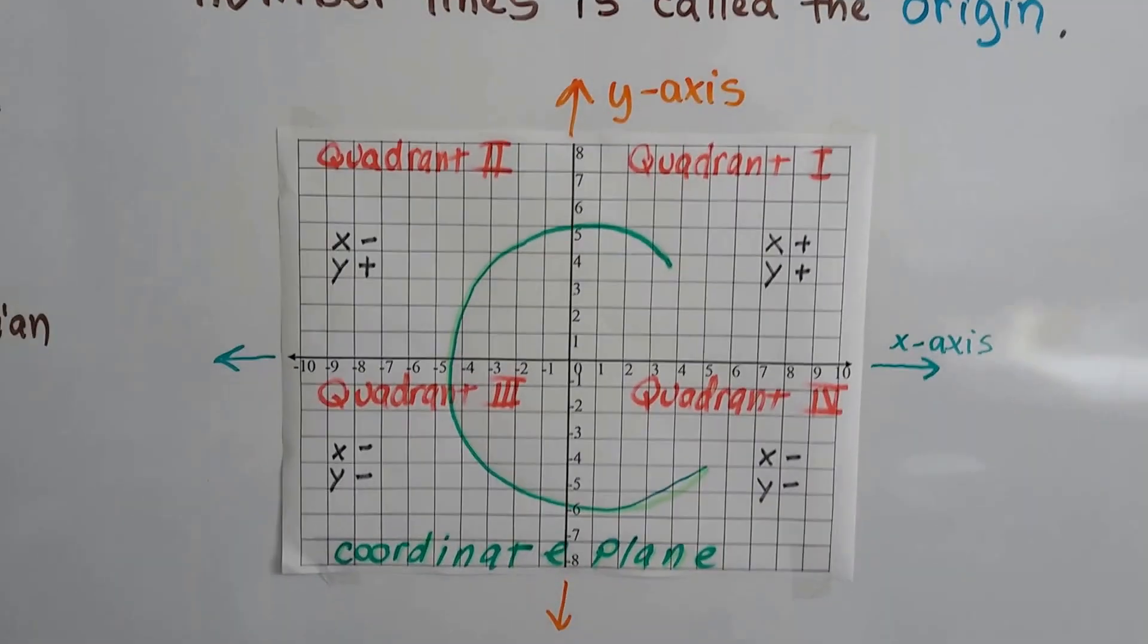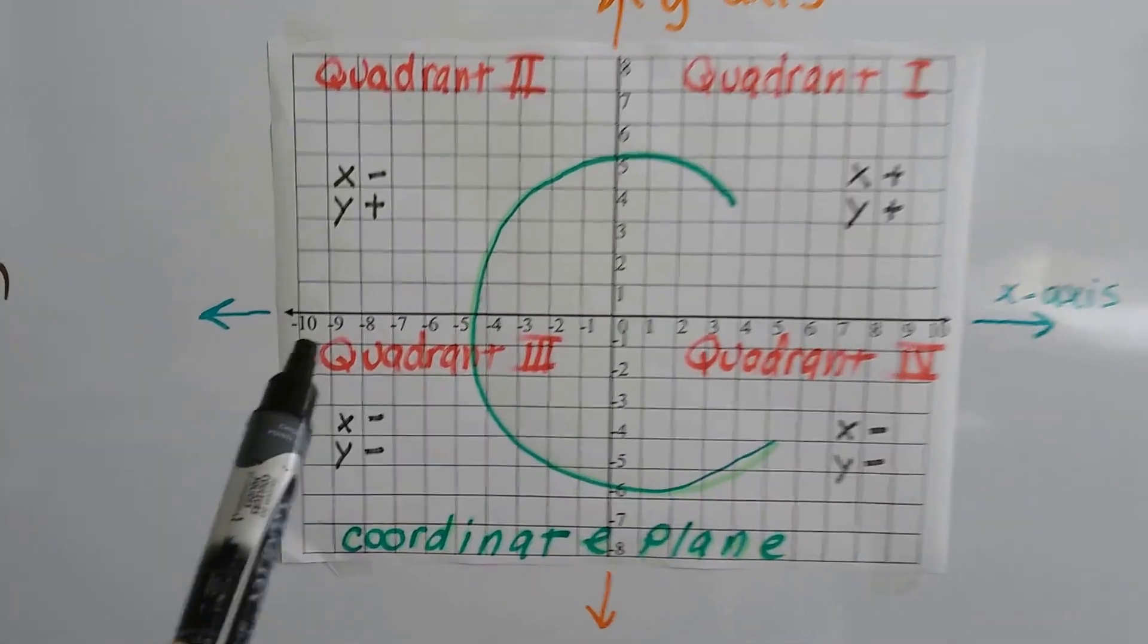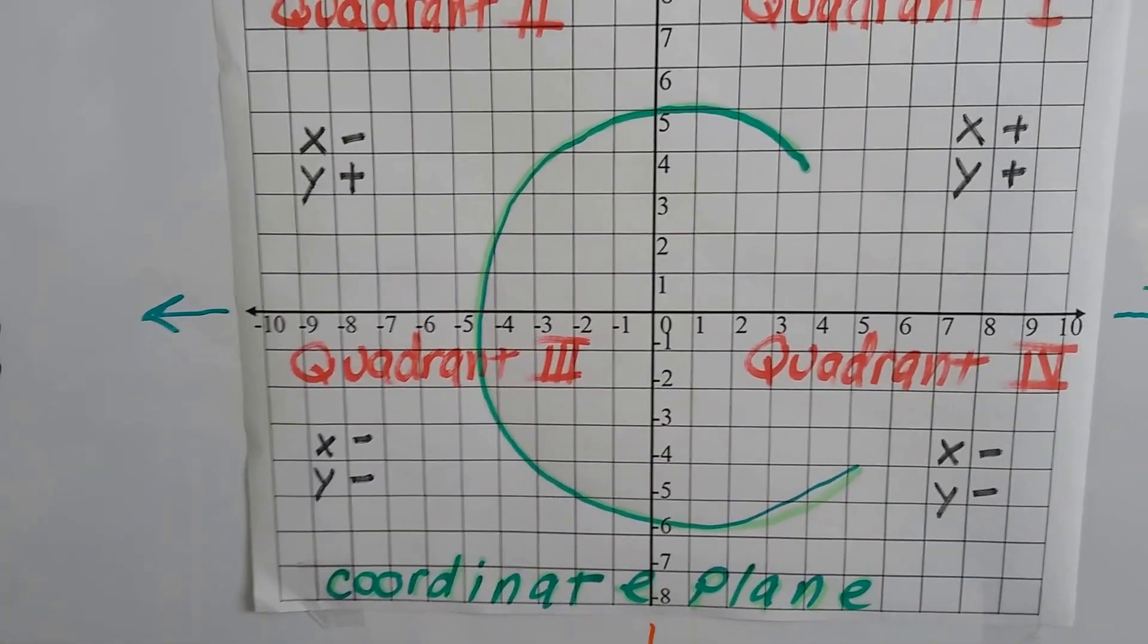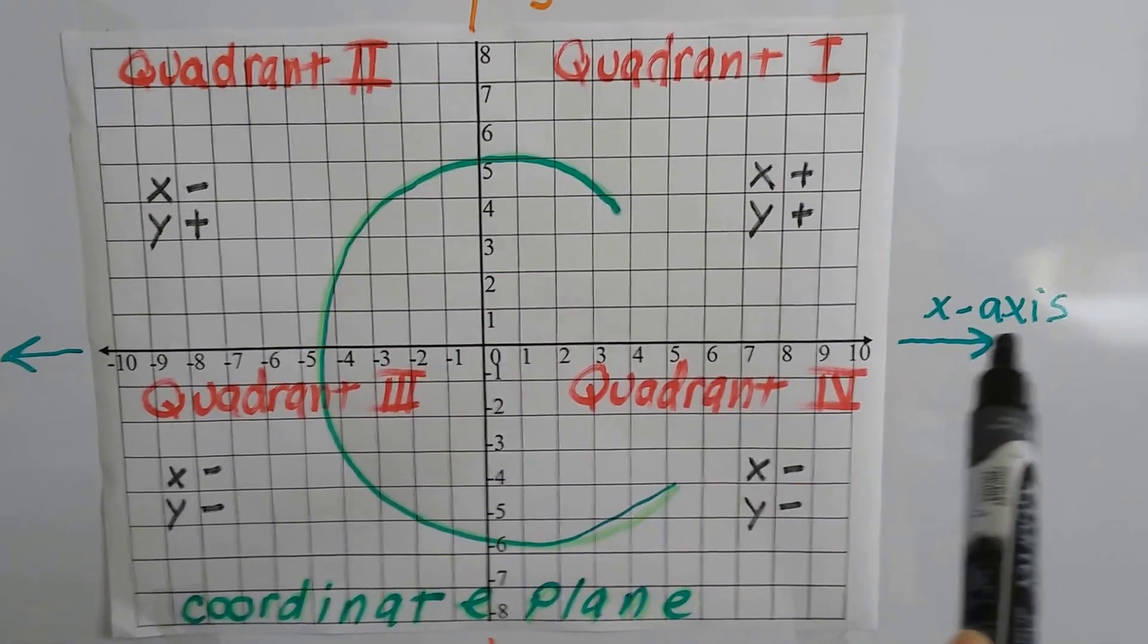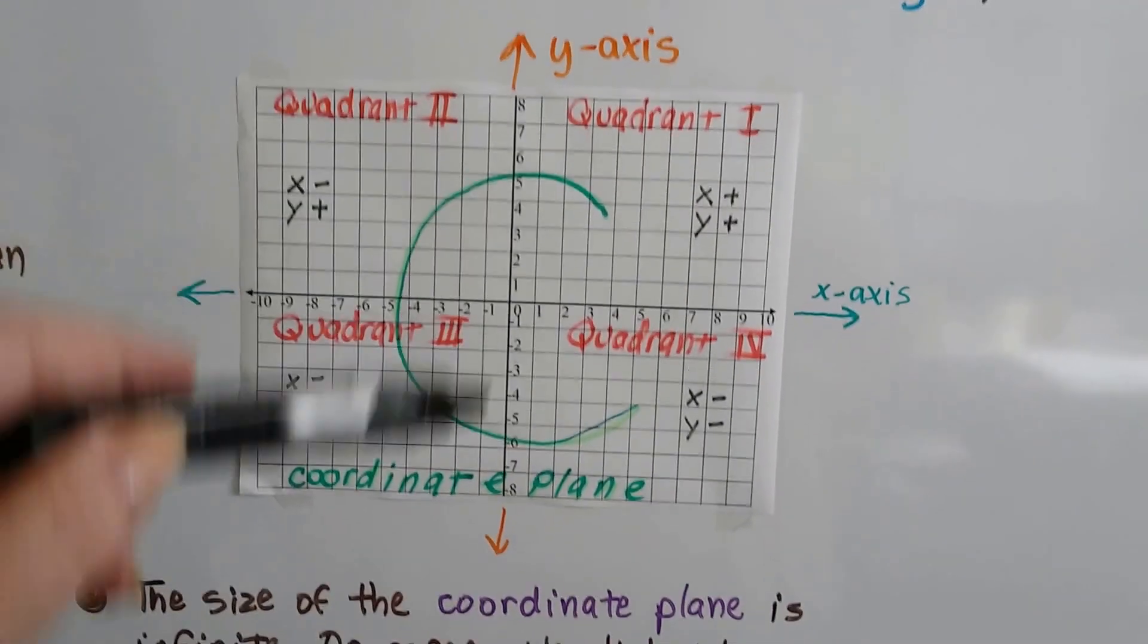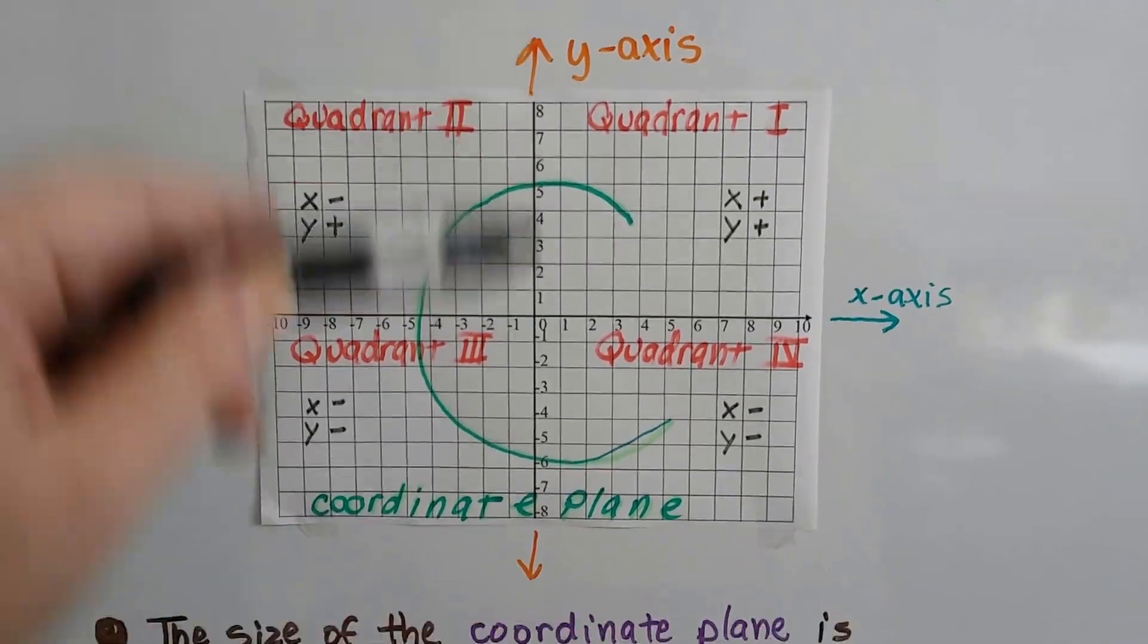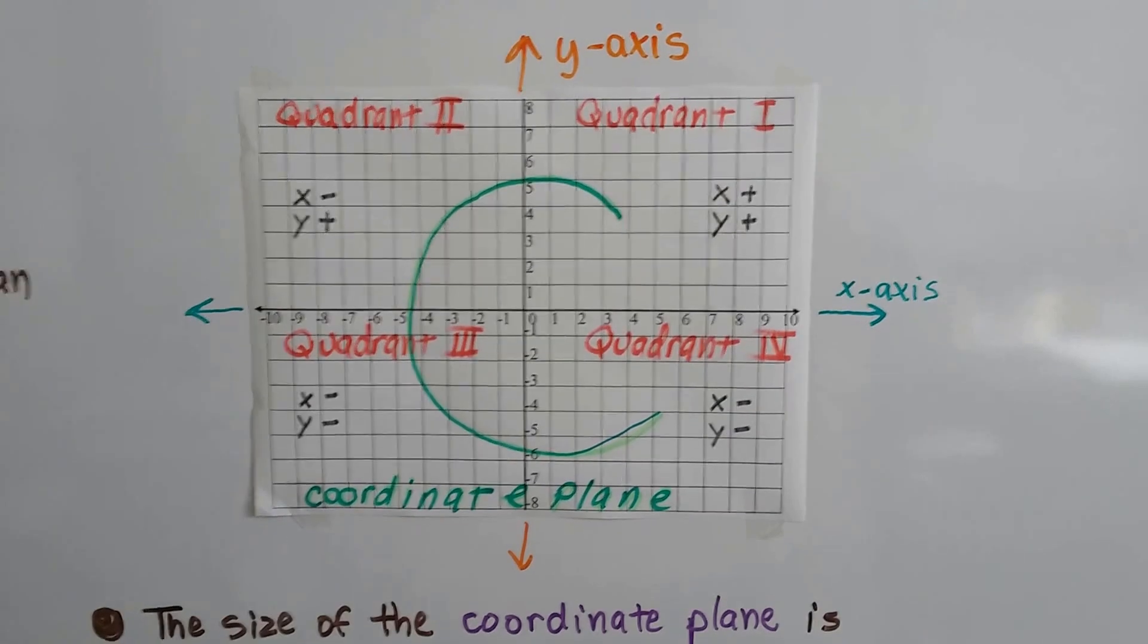You can see this arrow is pointing, continually going this way, and it's continually going this way, and that's the x-axis. And the y-axis—y points to the sky. That's one way to remember which one is which. Y points to the sky.